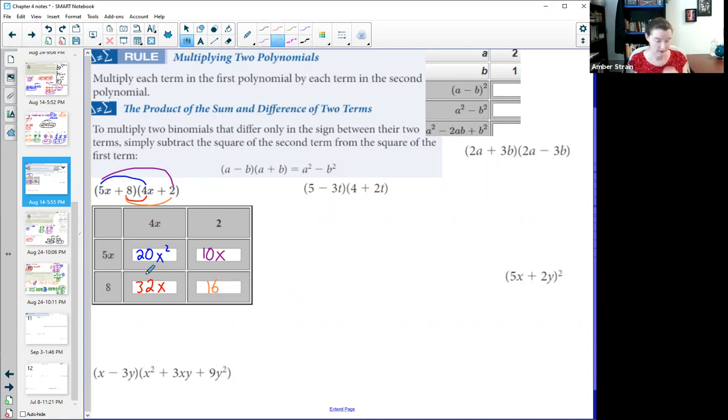32x. And last, of course, the 8 times 2 would be 16. Now what do we do with these terms? In this case, they are all positive. So if I wrote them all out, I wouldn't necessarily again have used this chart. As long as I was careful to be organized, I would have ended up with these four separate terms.